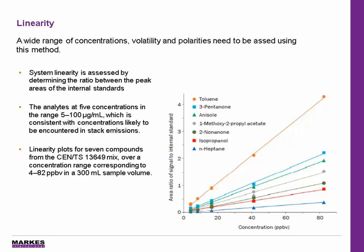It's important when looking at a group of compounds covering a wide range of concentration, volatility, and polarity that we have linearity across that range. System linearity was assessed by determining the ratio between the peak areas of the internal standard and the analytes at five different concentrations, ranging from 5 to 100 micrograms per milliliter — consistent with concentrations likely to be encountered in stack emissions. The graph here shows excellent linearity for all seven compounds in the mix, corresponding to 4 to 80 ppbV in a 300 milliliter sample volume.